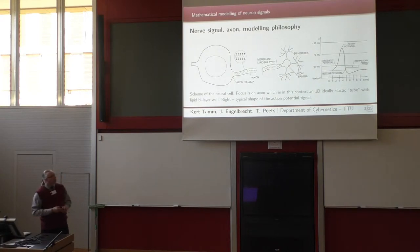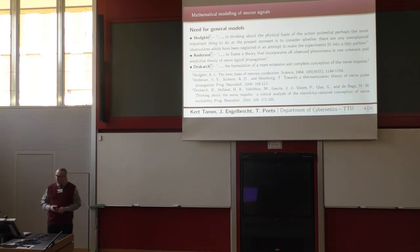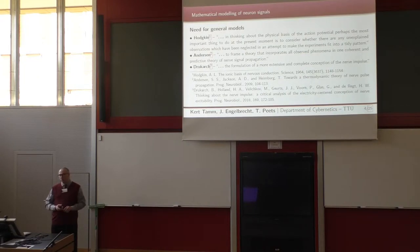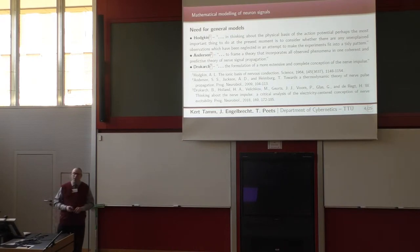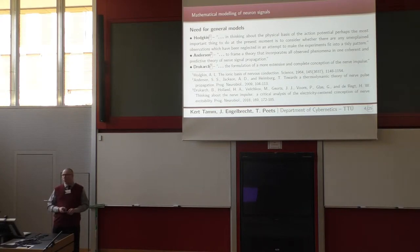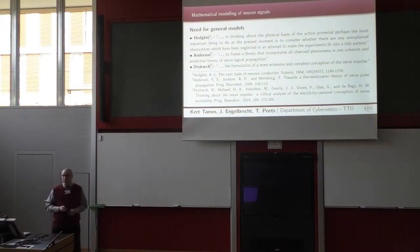On the right, there is a typical shape of the action potential. One could say that the study of nerve pulse propagation is almost a classical field of science with a number of well-established models, like for example the Hodgkin-Huxley model. However, over the years many people have noted the continued room for improvements, starting with Hodgkin and Huxley themselves, and several more recent publications.